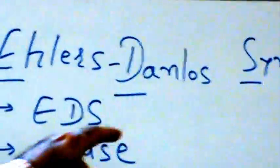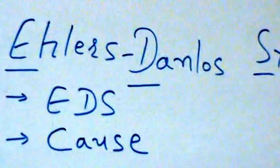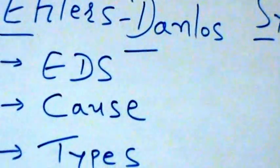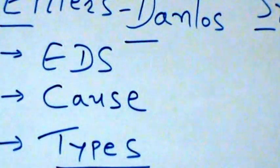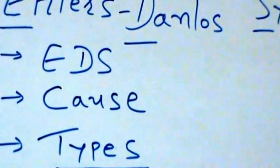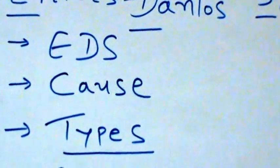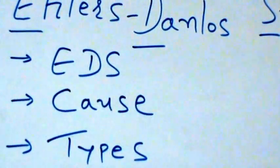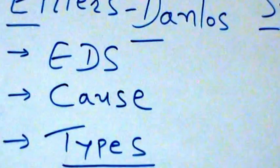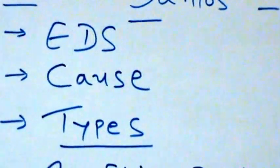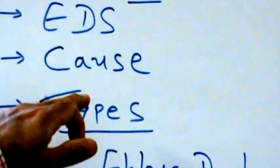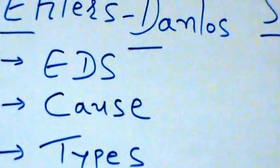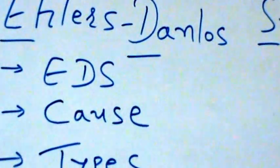Ehlers-Danlos syndrome, or EDS, is a group of genetic connective tissue disorders characterized by unstable hypermobile joints, loose stretchy skin, and fragile tissues. Like Marfan syndrome, EDS is caused by a defect in the body's connective tissue.